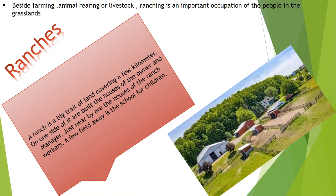Besides farming, animal rearing or livestock ranching is an important occupation of the people in grasslands. A ranch is a big tract of land covering a few kilometers. On one side of it are built the houses of the owner and manager, and just nearby are the houses of the ranch workers.